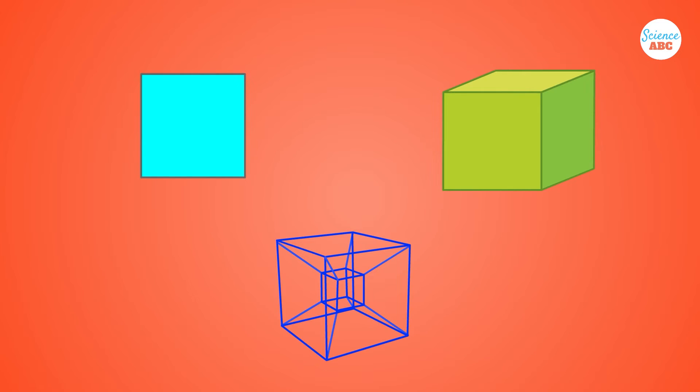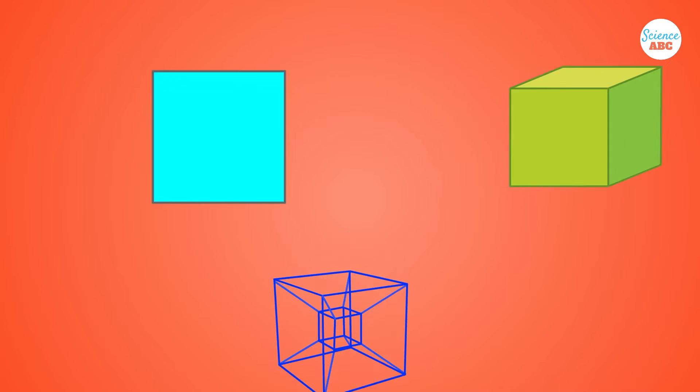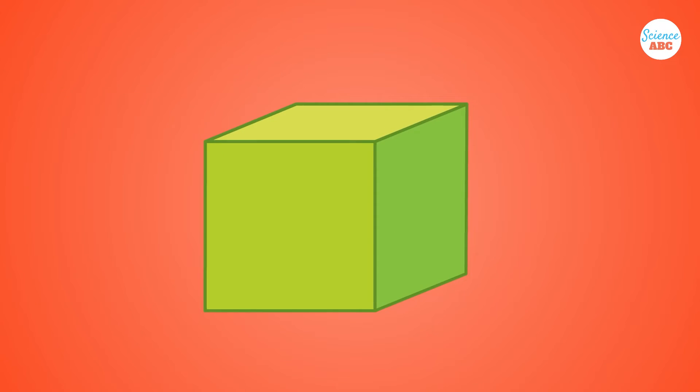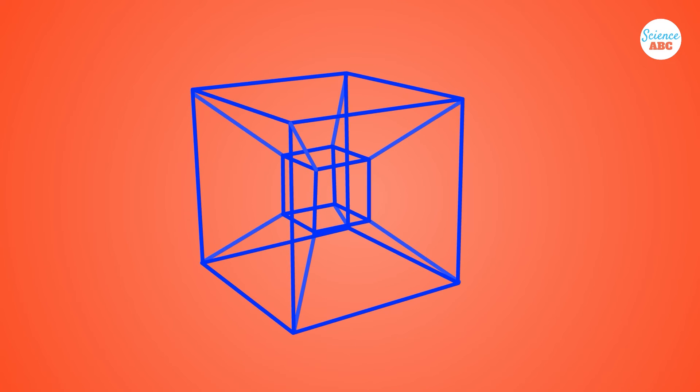Here is a simple way to conceptualize dimensions. A square is a 2D shape, so each of its corners has two lines coming off it at 90 degrees. A cube is three-dimensional, so each of its corners has three lines coming off of it. Similarly, a Tesseract is a 4D shape, so every corner has four lines coming off of it.